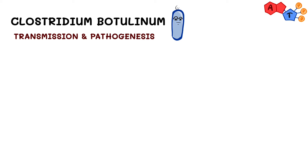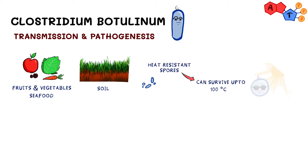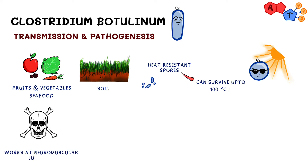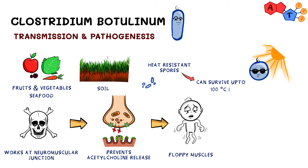Clostridium botulinum can be found in many places like vegetables, fruits, seafood, soil, etc. It produces heat-resistant spores that can survive up to 100 degrees Celsius. Botulinum toxin works at neuromuscular junctions to prevent acetylcholine release, resulting in floppy muscles, because acetylcholine is responsible for movement. This type of paralysis is opposite to the spastic paralysis that occurs with Clostridium tetani.